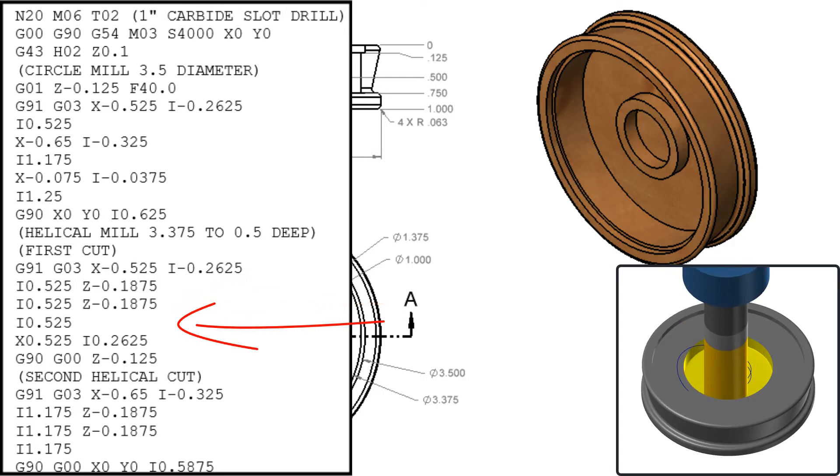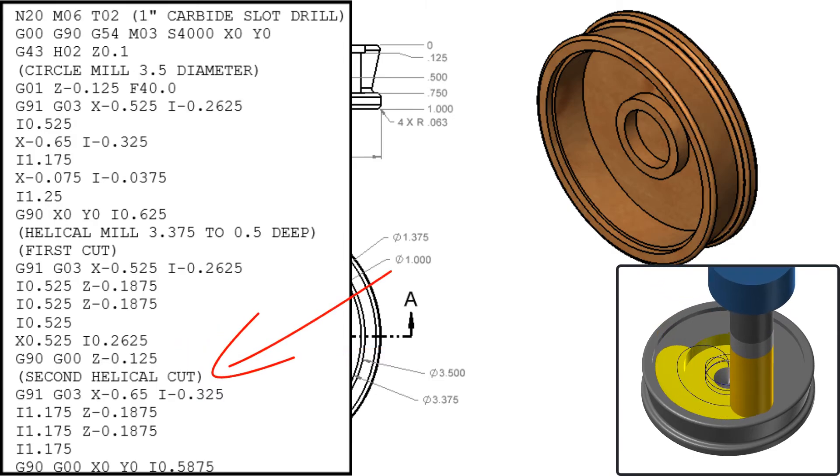Next, to clean up the ramp, a full circle will be coded with no step down. Then the cutter will arc back to the center of the part and rapid back to Z minus 0.125. Next it will arc into position for the second rough cut, take two helical passes to the final depth of negative 0.5, and one final circular pass to clean up the ramp.